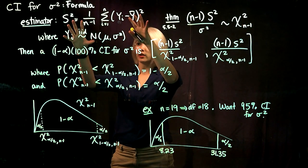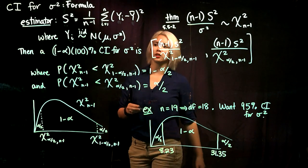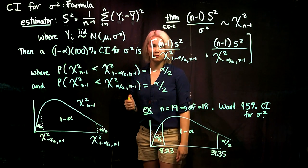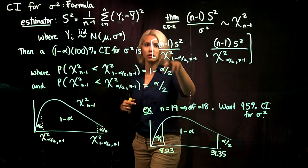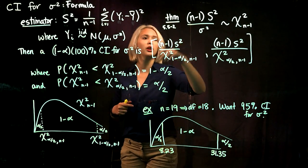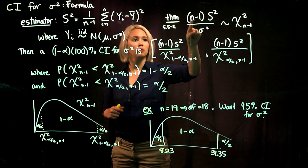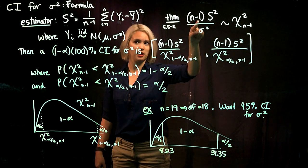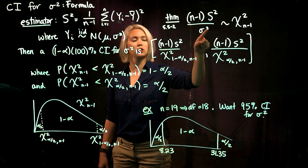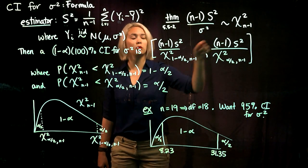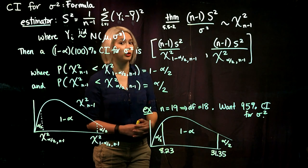So there's our estimator, here's our setup: the yis are coming from a normal distribution with mean mu and variance sigma squared. Then a theorem — Theorem 5.52 in your book — states that if we take our sample variance, multiply by n minus 1, and then divide by the unknown sigma squared, we end up with a chi-squared distribution with n minus 1 degrees of freedom.